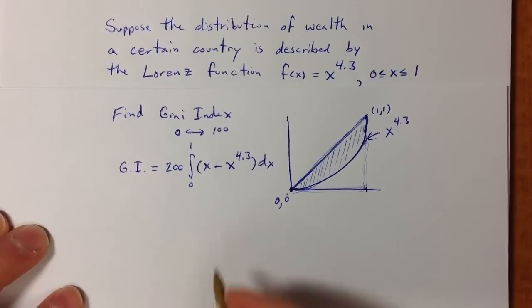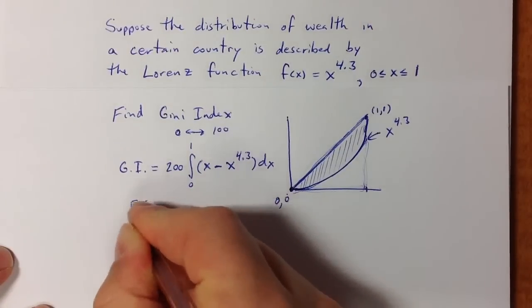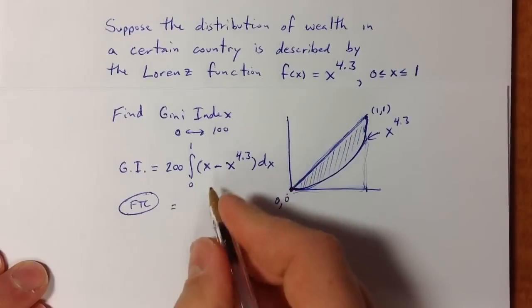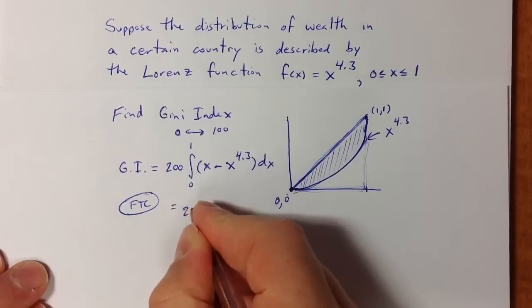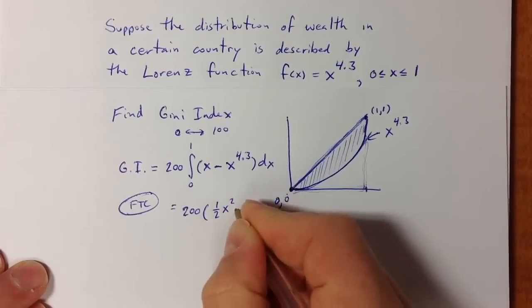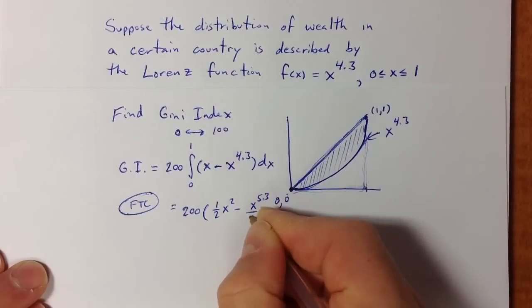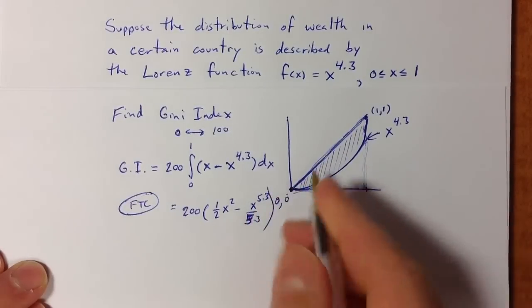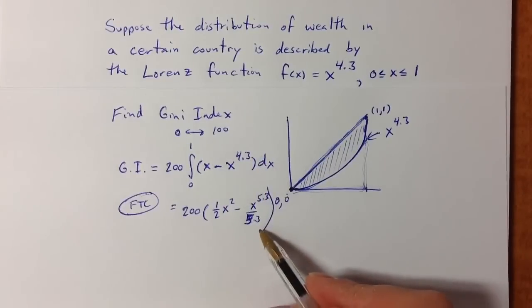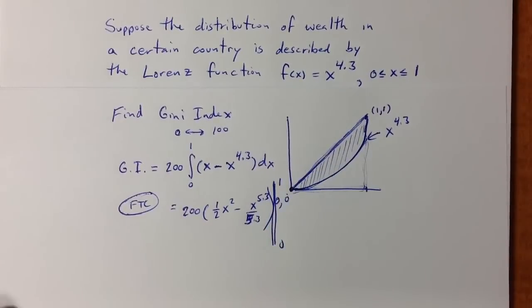We can calculate that in a couple of ways using the fundamental theorem of calculus. It's pretty straightforward. Finding an antiderivative, we get (1/2)x^2 minus x^5.3 divided by—I'm sorry—divided by 5.3, by adding 1 to each exponent and then dividing by the new exponent. I want to evaluate those values at 0 and 1.